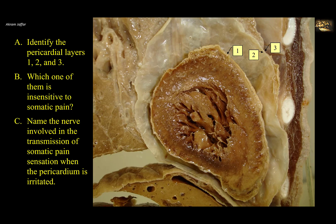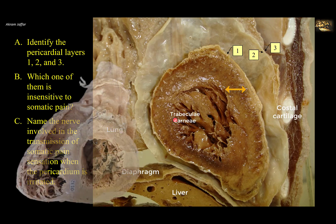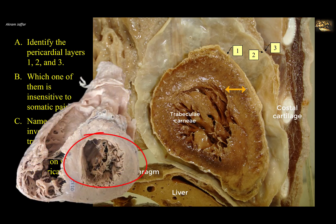Identify the pericardial layers 1, 2, and 3; which one is insensitive to somatic pain; and name the nerve involved in the transmission of somatic pain when the pericardium is irritated. This is a sagittal section of the thorax passing through the heart. You can see the costal cartilages in the anterior wall, the lung posteriorly, the diaphragm, and the left lobe of the liver. The main feature is the heart, identifiable by the trabeculae carneae inside the ventricular wall. The thickness of this ventricular wall corresponds to the left ventricle, the thickest chamber of the heart.